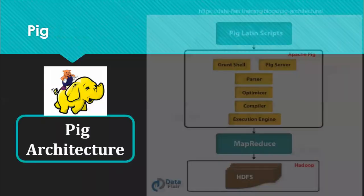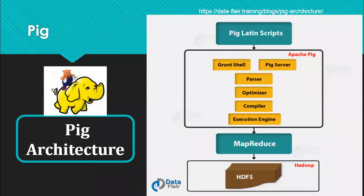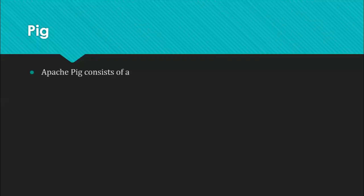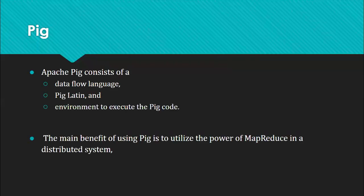Before the last lecture we started with Pig, where we saw the architecture of Pig. Pig uses a Latin script where a grunt shell is provided. A user or client can write shell scripts which are first read by the Pig server — it parses them, finds the optimizer output, compiles, and executes the script. It requires MapReduce and the data is stored in an HDFS file.